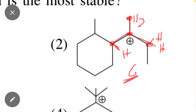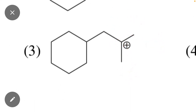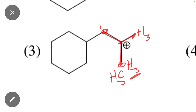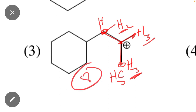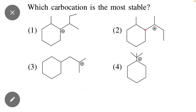Similarly, if we check option three: the positive charge carbon is directly attached to this carbon, this carbon, and this carbon. This carbon contains 3 hydrogens, this carbon also contains 3 hydrogens — because this formula is CH3 which contains 3 hydrogens — and this carbon contains 2 hydrogens. So total hydrogen is 3 plus 3 plus 2, which equals 8 hydrogens. There are a total of 8 alpha hydrogens, which is the maximum among all four compounds.